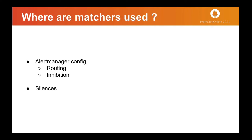Matchers are used in various places. They are used in the Alert Manager config for routing and inhibition, and they are also used for silences. Matchers existed in Alert Manager, but I implemented a new style of matchers that are an improvement. The old style did not have support for negative matching. Negative matchers are helpful when you want to send a notification to all Slack channels except one, or when your alert is firing in one cluster and you need to send notifications only at that time. Previously, there were many different config options for regex and normal strings, but they have all been merged in the new matchers, simplifying the config options.